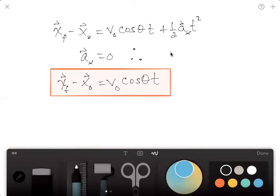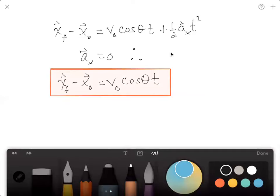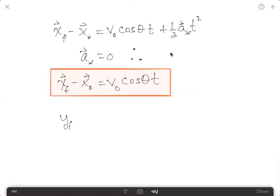The next equation that we're going to utilize is, let me choose a different pen, y_f, the displacement in the y direction, times the initial velocity in the y direction, times the time of flight. And again, this is plus one half a_y t squared.